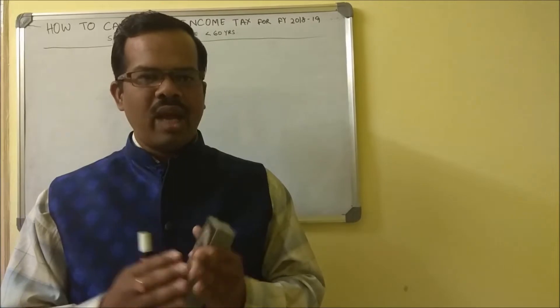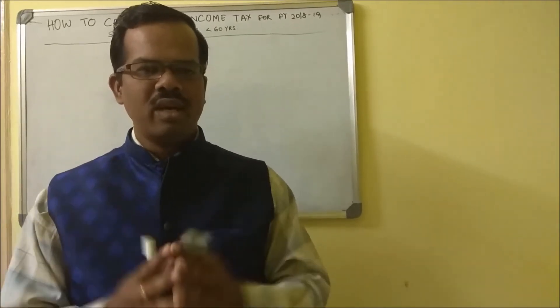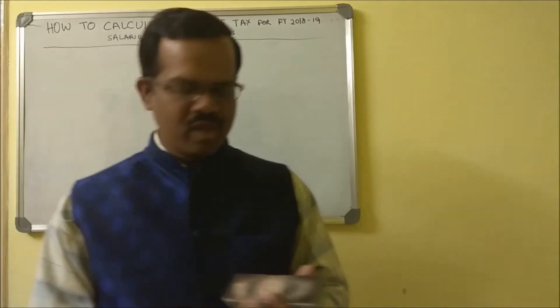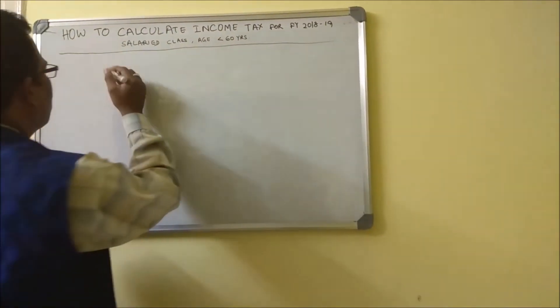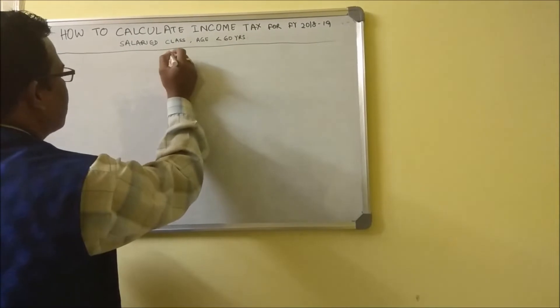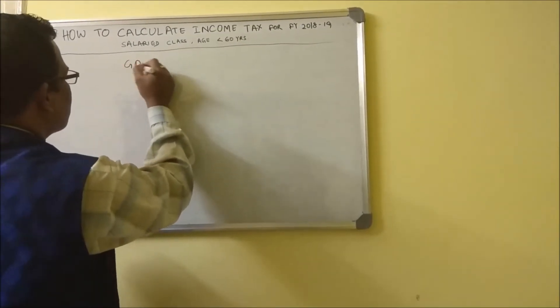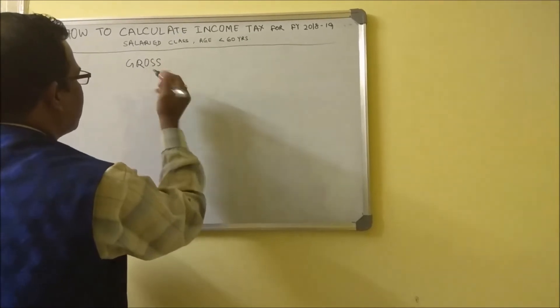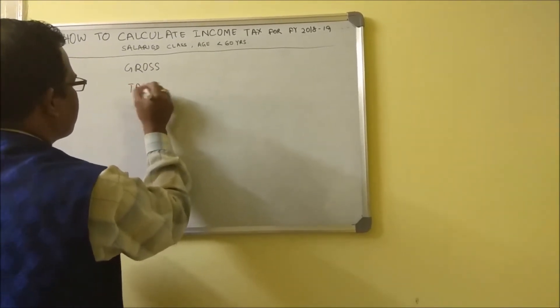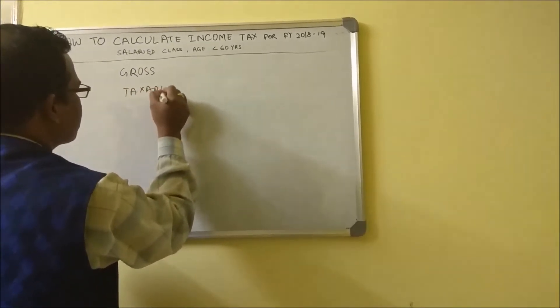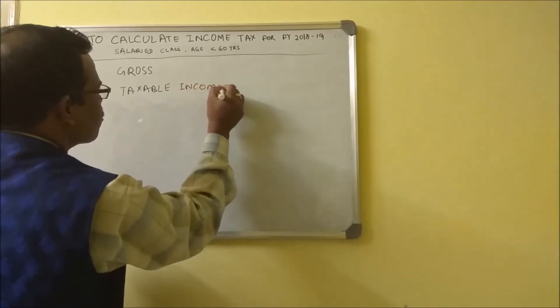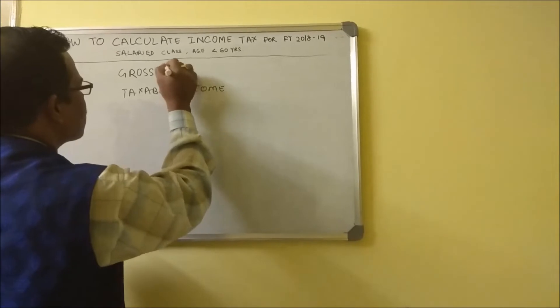I will show you how exactly this tax calculation works out. I am introducing two terms: one is gross income, another is taxable income.